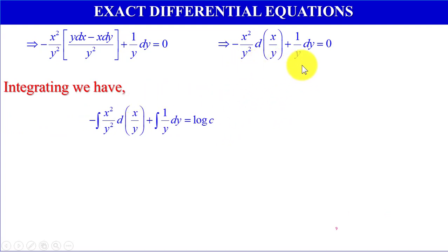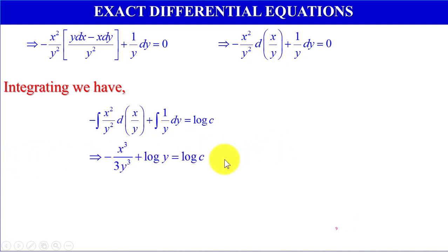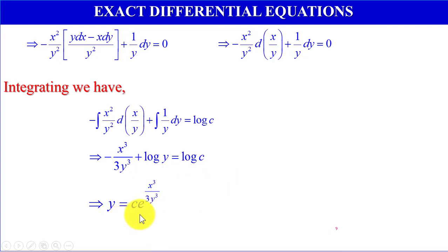This implies x squared by y squared times d(x/y) plus (1/y) dy equals 0. Integrating, we have minus integration of x squared by y squared d(x/y) plus integration of 1/y dy equals log c, which gives minus x cubed by 3y cubed plus log y equals log c. Therefore, y equals c times e to the power x cubed by 3y cubed.